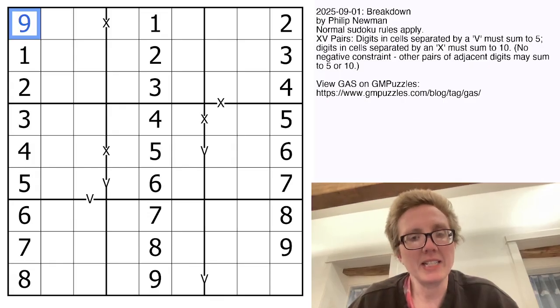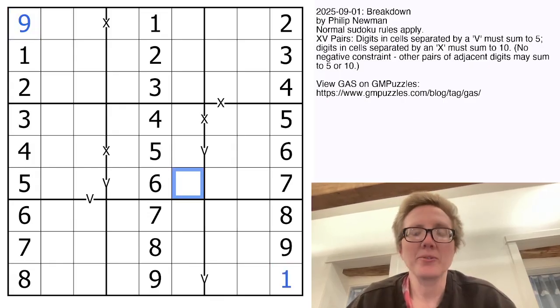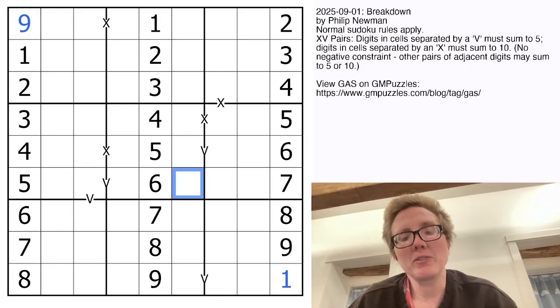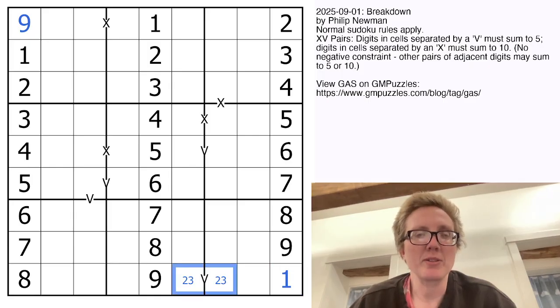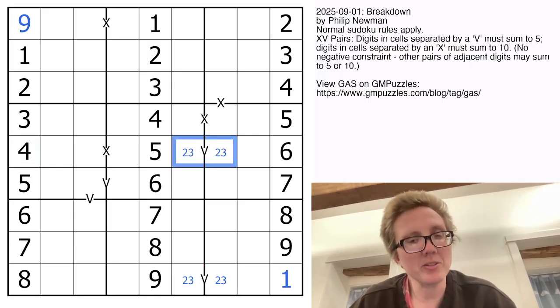So we're going to mark this 9 and this 1 to start off. Now there are only two ways to make a sum of 5, either 1 plus 4 and 2 plus 3. There's a 1 in this row already, so that's going to be 2 plus 3, and there's a 4 in this row already, so that will also be 2 plus 3.